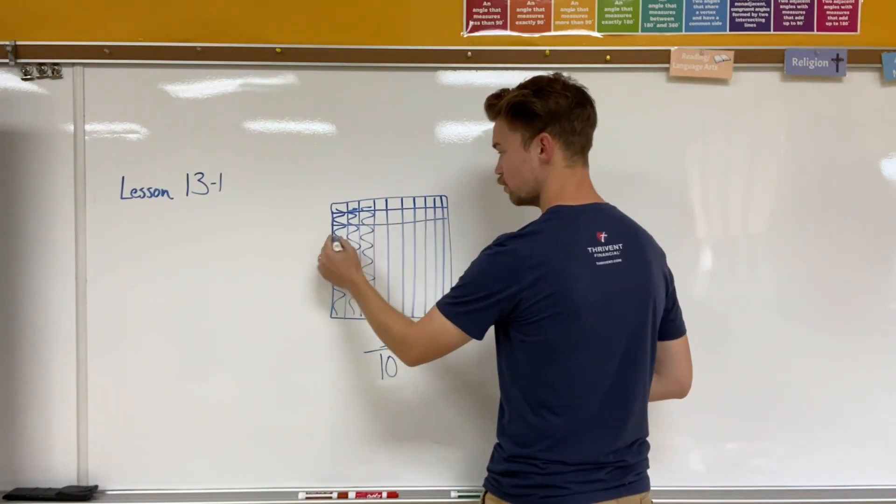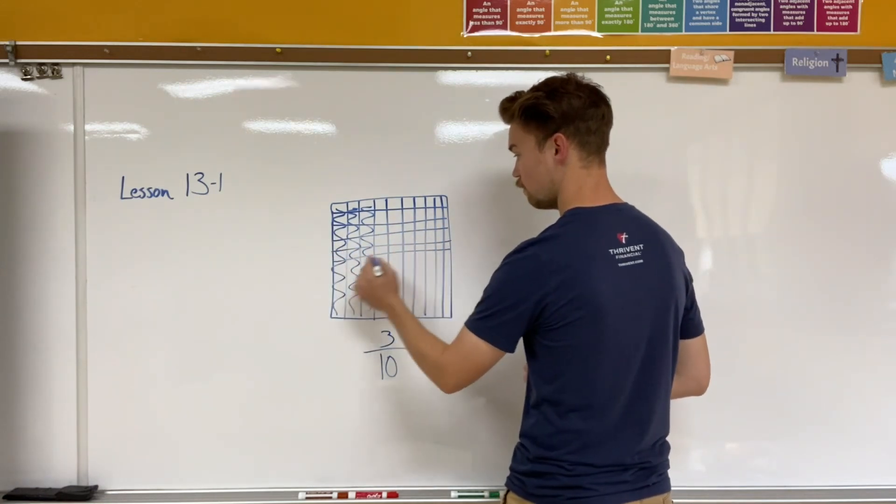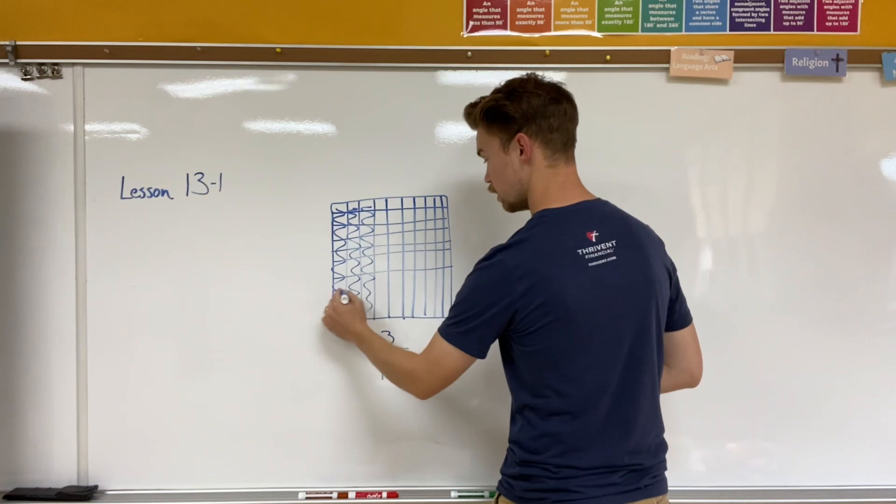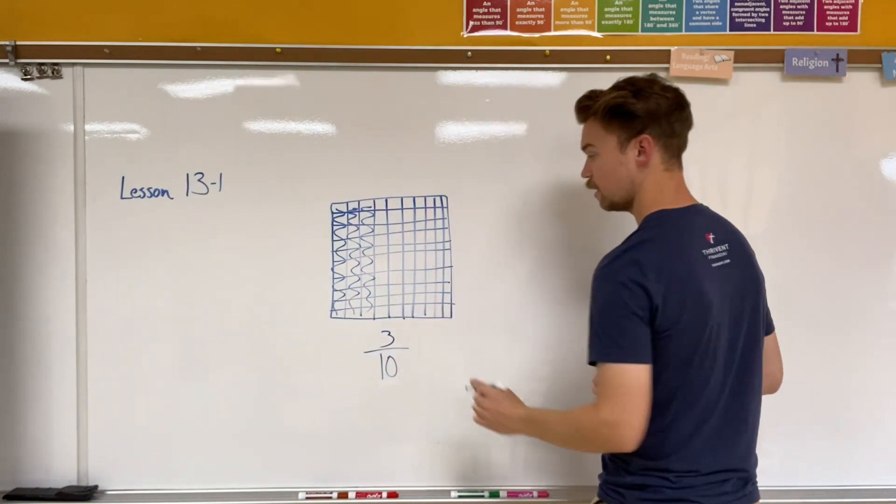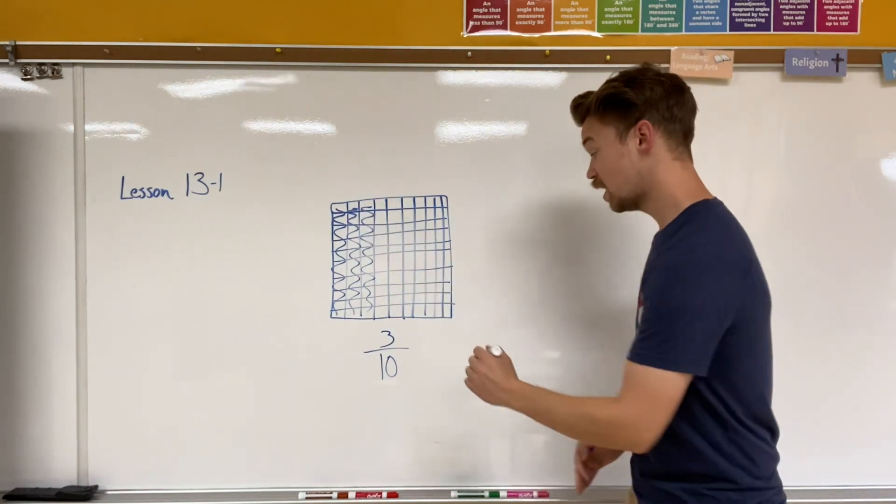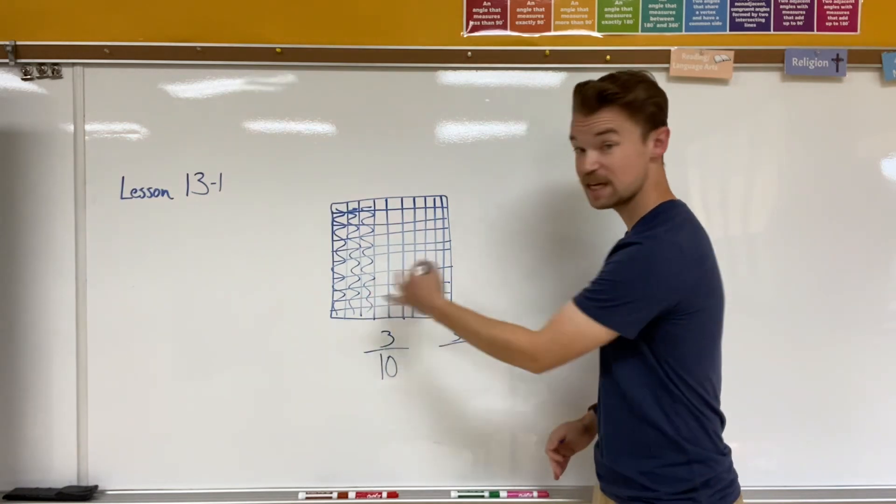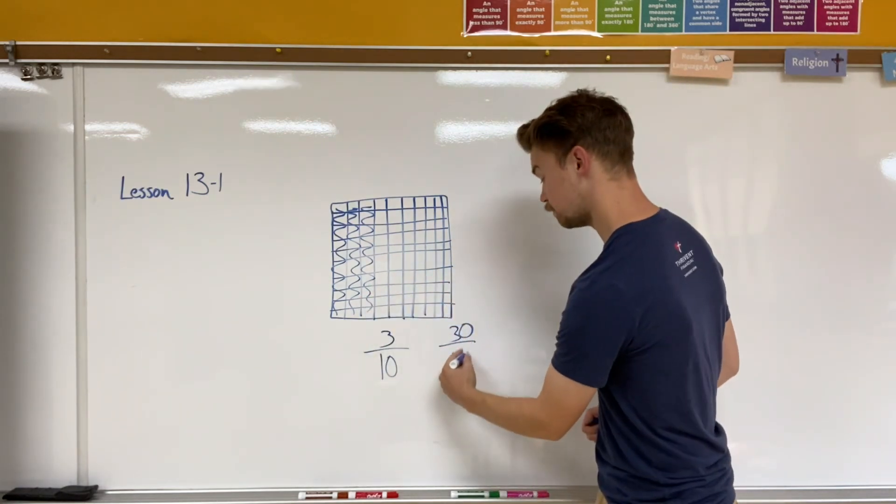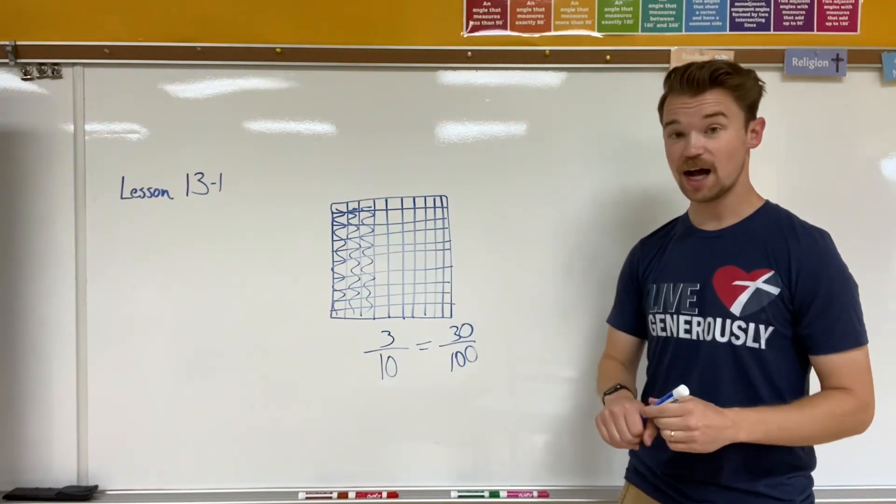So I have one, two, three, four, five, six, seven, eight, nine, and ten. Now instead of three pieces all filled in, I now have 30 pieces all filled in, and I have ten times ten, which is one hundred. So three tenths is equal to thirty hundredths.